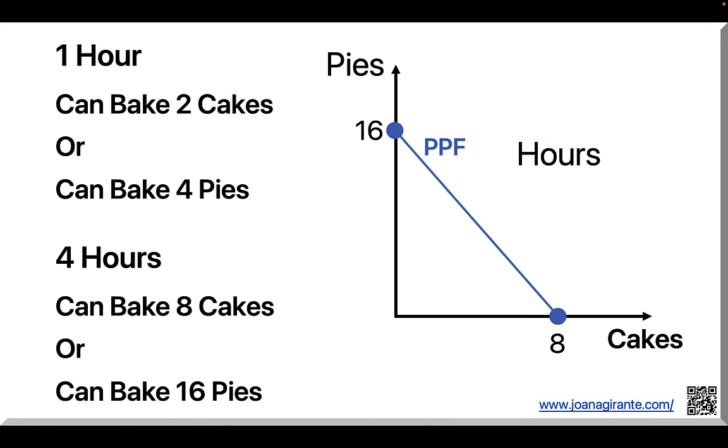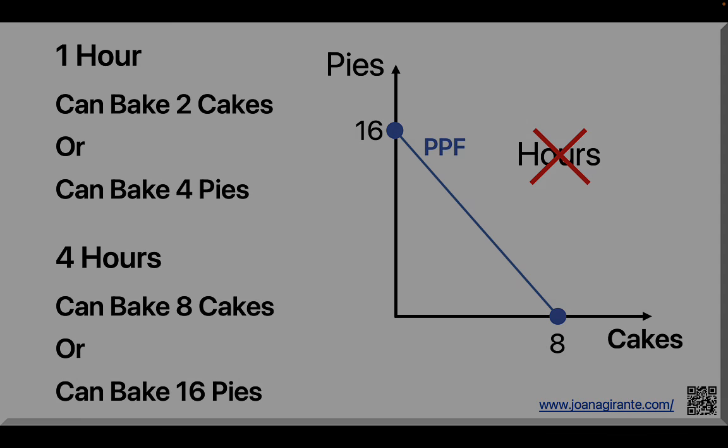Now, notice we don't write the hours anywhere on our graph because that's not the point of the PPF. The point is to show the desserts we can bake in the time that we have, and the trade-offs we face when we want to produce more cakes or more pies. Thanks for watching.